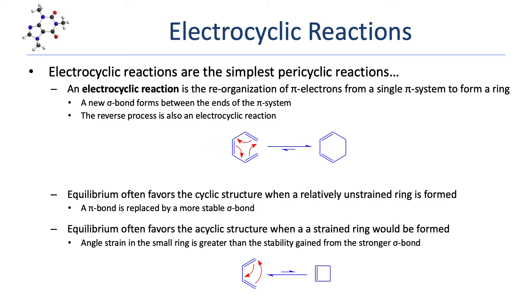Formation of smaller, 4-atom rings often favors the acyclic structure. The angle strain introduced by the ring outweighs the stability gained from the stronger sigma bond. Here we see 1,3-butadiene cyclized to give cyclobutene. In this case, the acyclic diene is preferred at equilibrium.